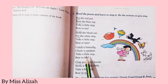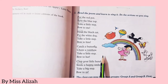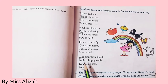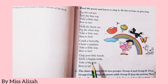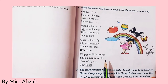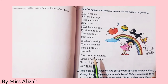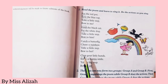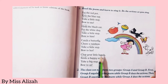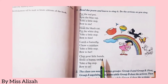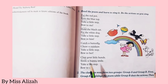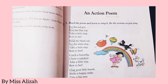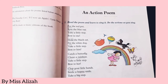All right, take a little step, bow to her. 'Clap your little hands, smile a happy smile, take a big step, bow to us.' What does 'clap' mean? Clap ka matlab hota hai taliyan bajana — to clap. Clap your little hands, smile a happy smile. Take a big step and bow to us.